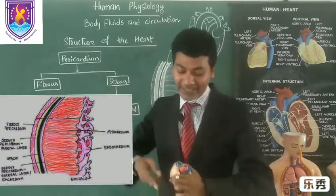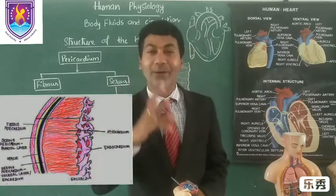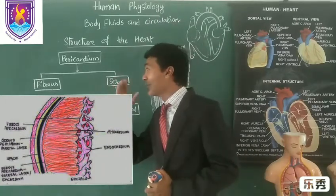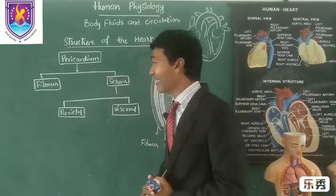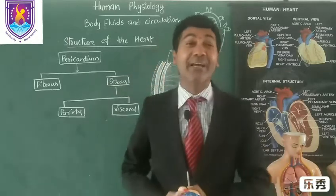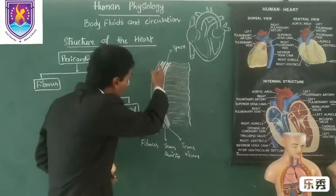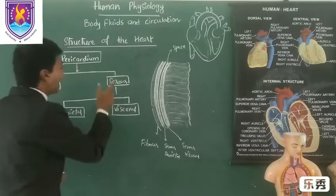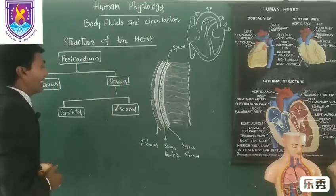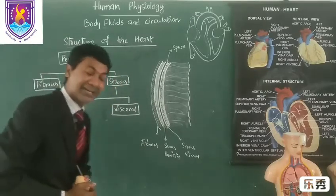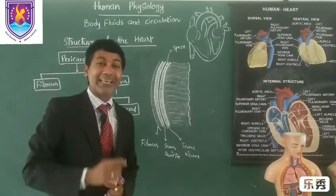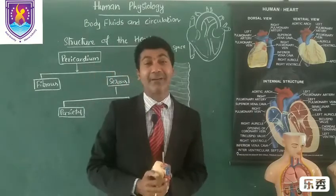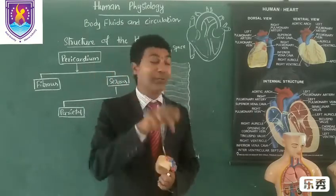Heart is surrounded by a double-walled membrane known as pericardium. The outer wall of pericardium is known as fibrous pericardium. The inner wall of pericardium is known as serous pericardium.